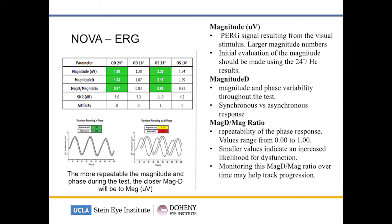That will give you a lower or abnormal magnitude D. When you have the magnitude D to magnitude ratio, that should be about 1.0 in a normal healthy patient, whereas if you have a phase shift like this you'll have a low mag D to mag ratio.